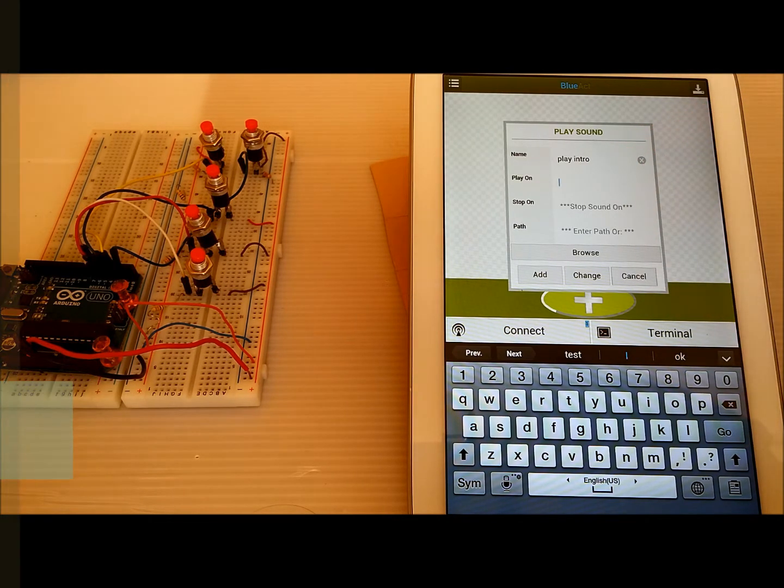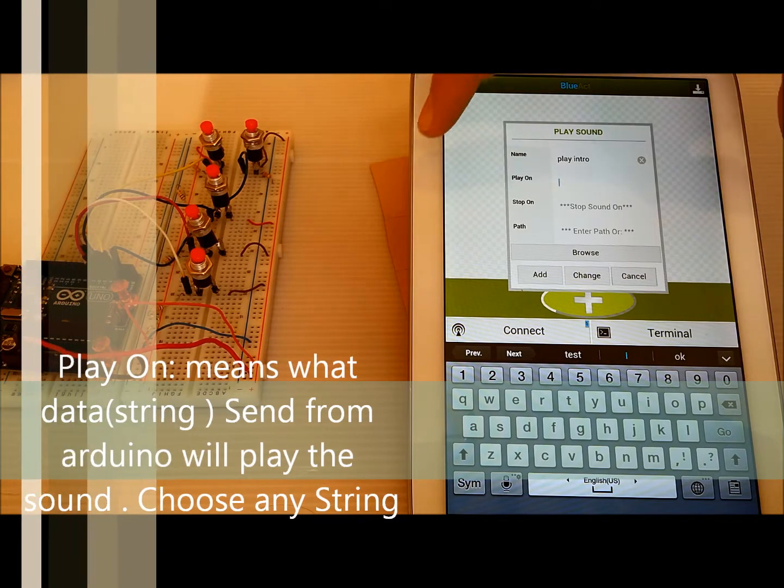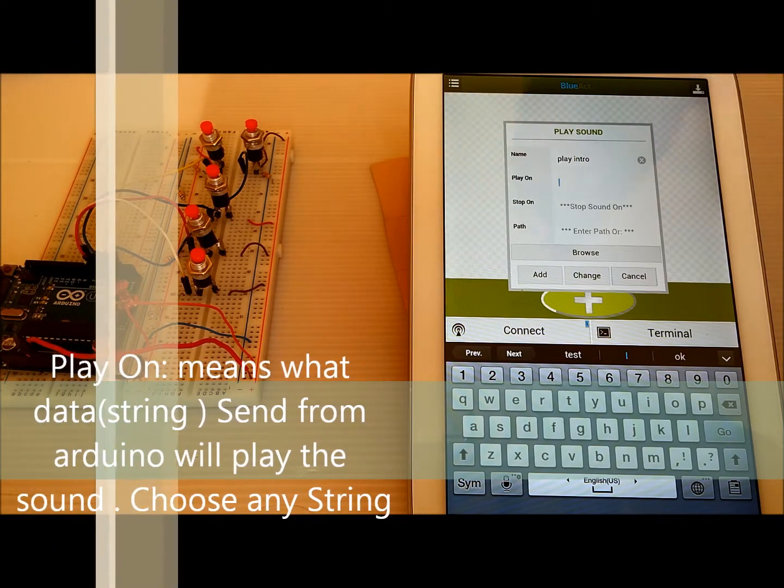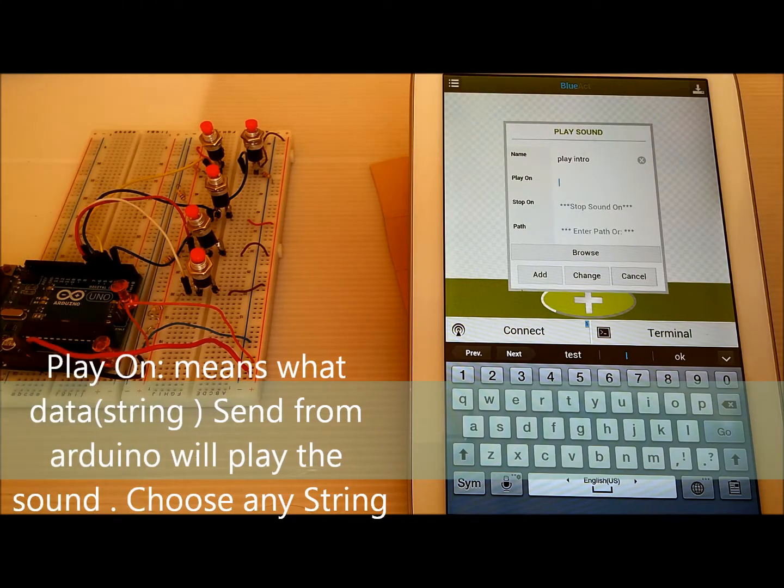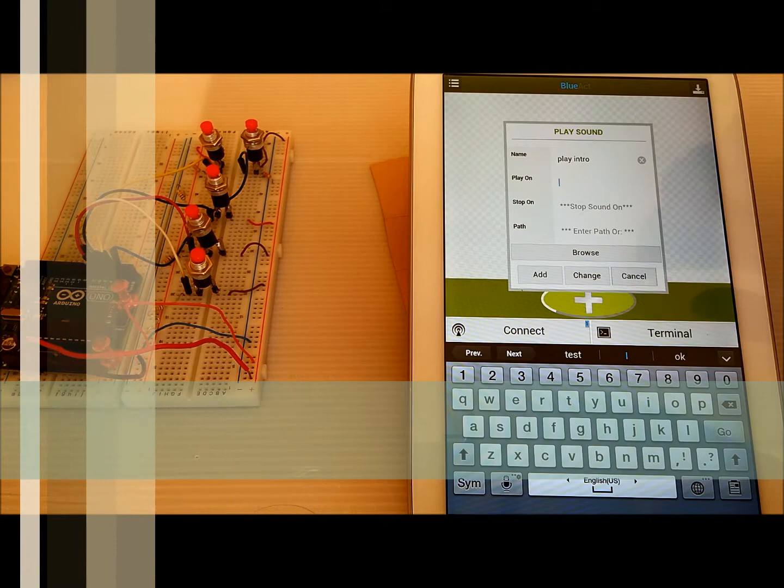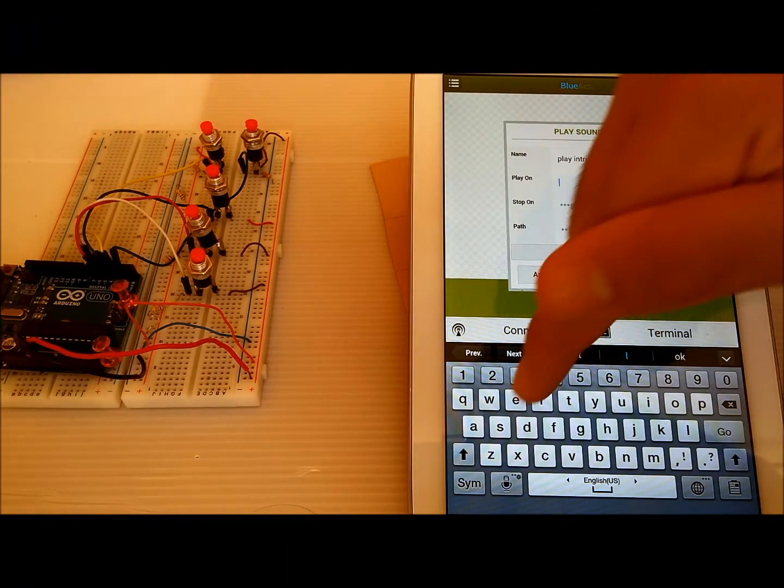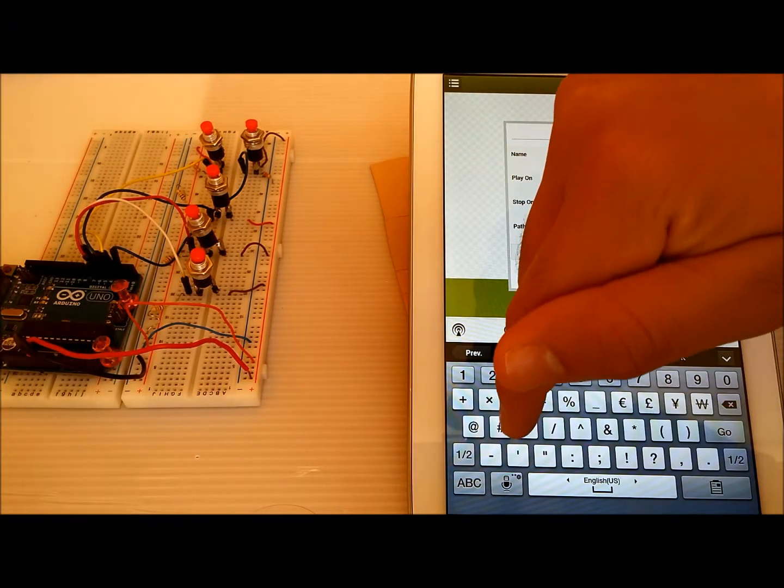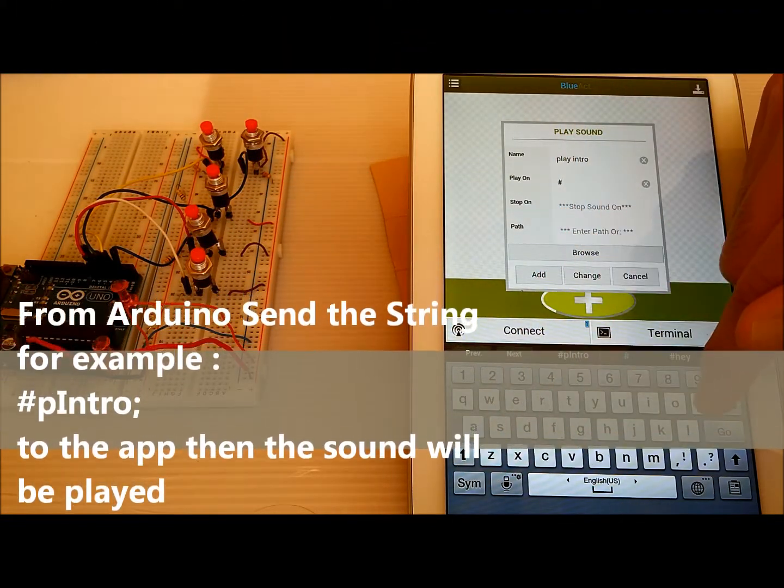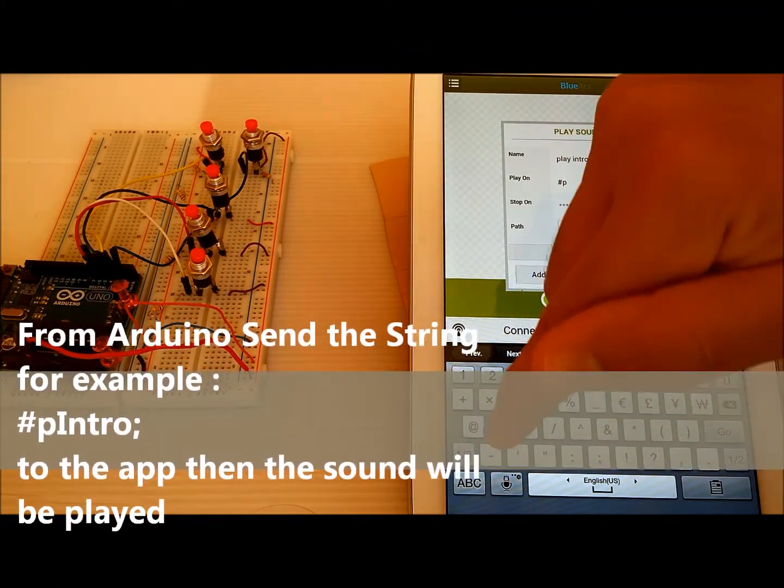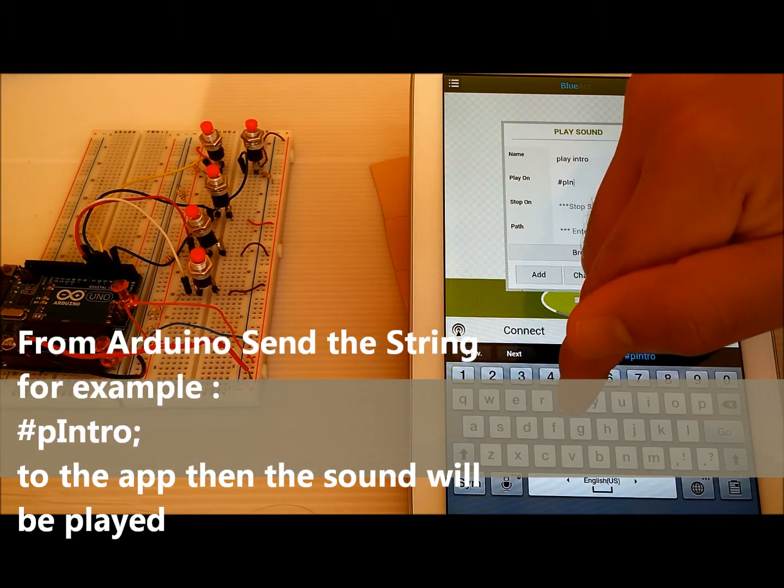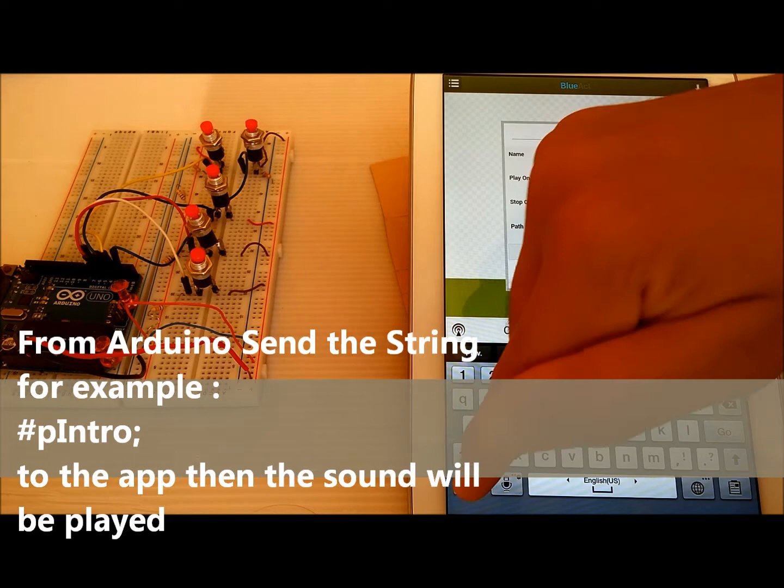Play on is the string that when this application receives play on a string, it will play the action or play the sound. So for example, if we send hash P enter semicolon.